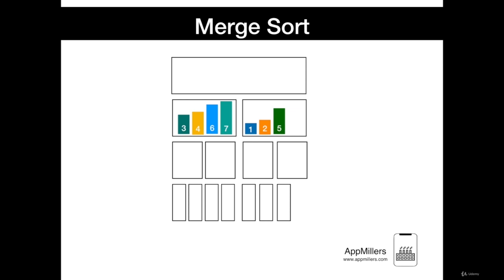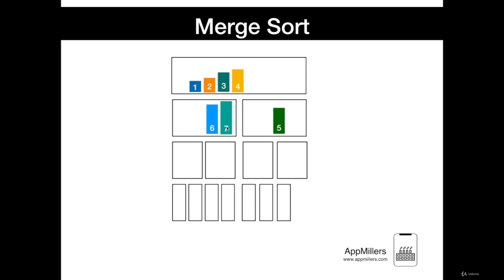We compare the first elements and the smaller one is moved. The first element from the left group is 3 and from the right group is 1. Since 1 is less than 3, 1 is moved. Then we compare 2 with 3, and 2 is moved. We continue like this, and after combining the groups, our sequences are sorted.